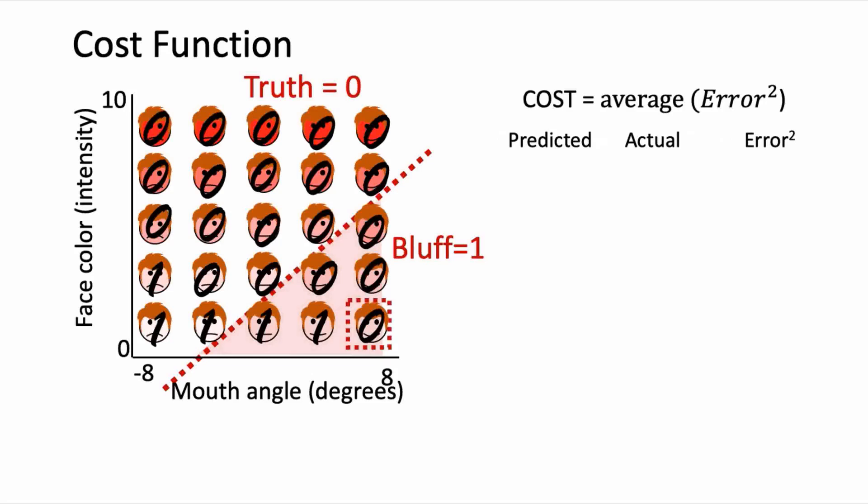Let's look at how we calculate errors for the current state of our model parameters, going one data point at a time. For this data point in the bottom right, the model predicts a 0, so the model thinks our friend is not bluffing. But the actual label from our data set is a 1. So the error — our model's predicted value minus the data's actual value — is negative 1, and the error squared is 1. For the next data point, the model predicts a 1 and the actual label is also a 1, so the error is 0. For the third data point, again the model predicts a 1 and the actual label is 1, so the error is 0.